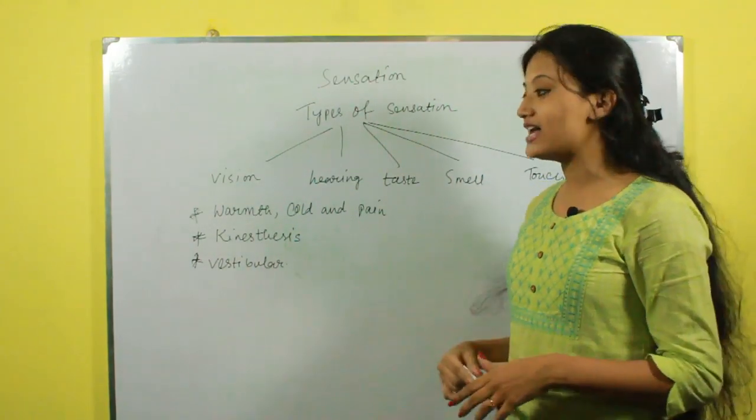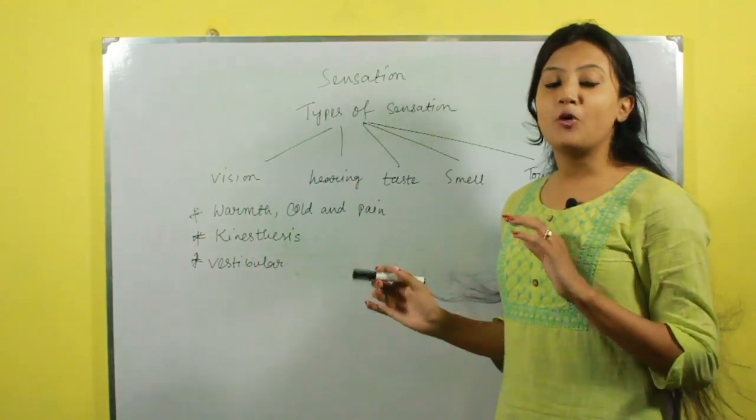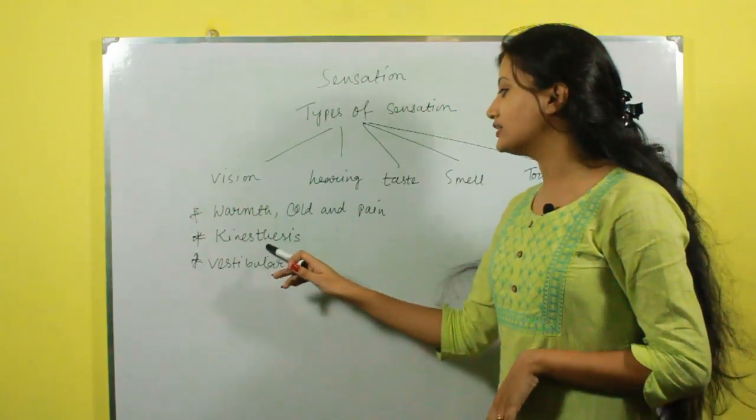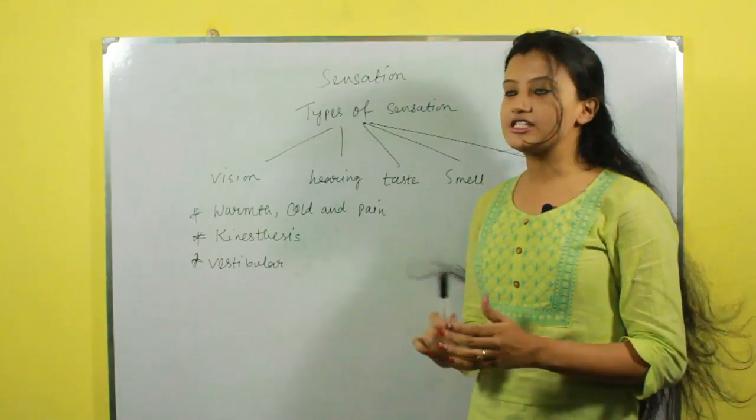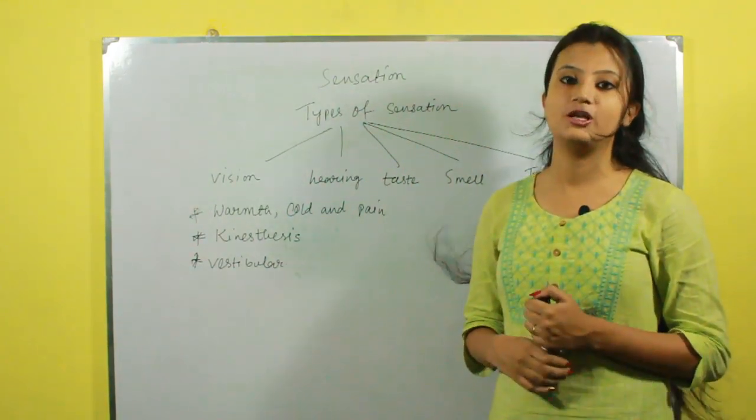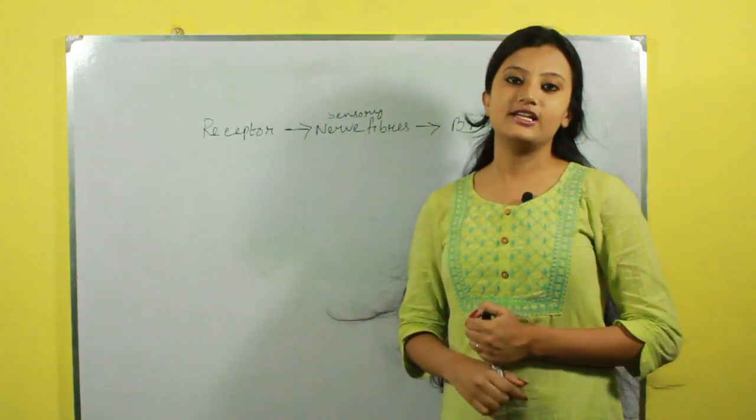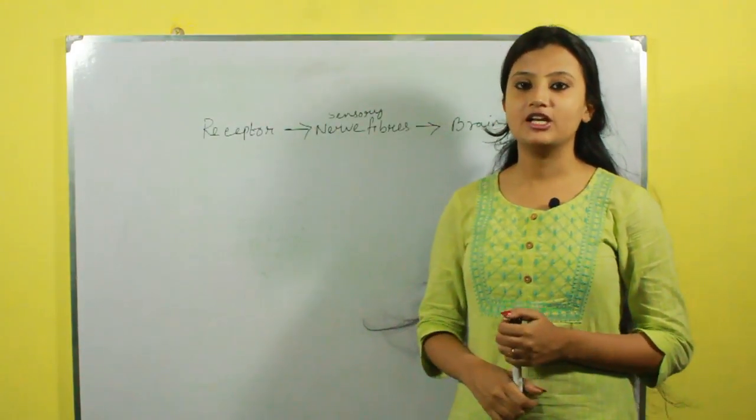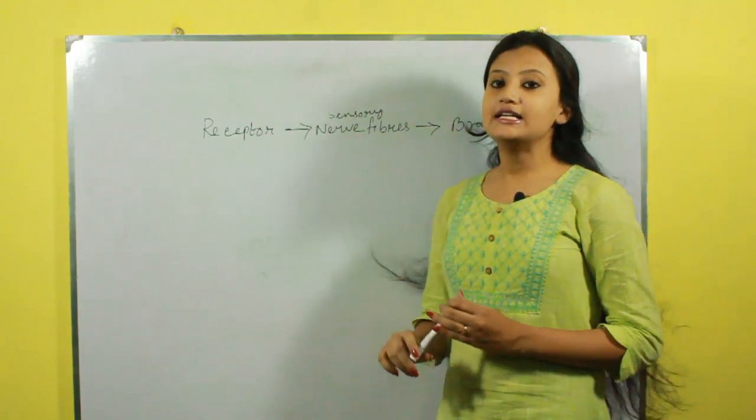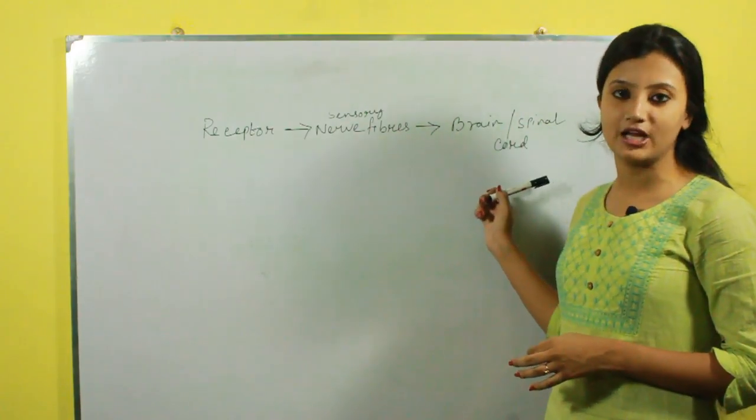Sense organs in the muscles, tendons and joints tell us about the position of the limbs and the tension of the muscles. They are called kinesthesis, and the vestibular sense tells us about the movement and stationary position of the head. Each sensory system is a kind of channel consisting of a sensitive element called a receptor. Nerve fibers leading to the brain and spinal cord are called sensory nerve fibers.